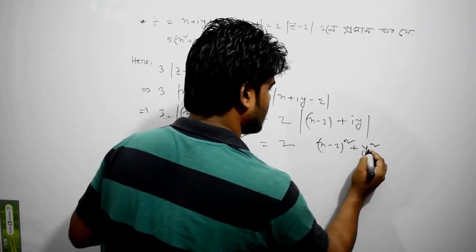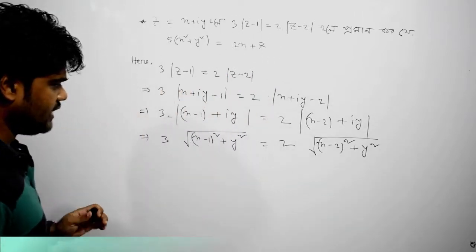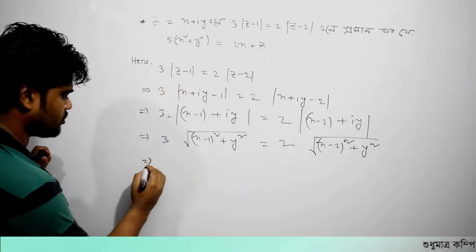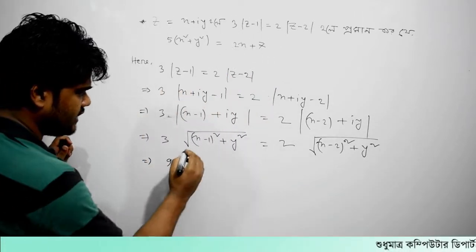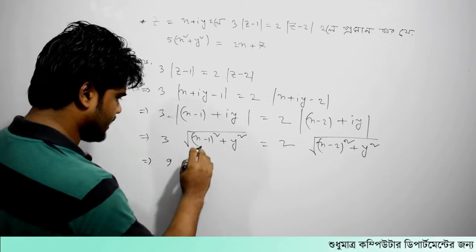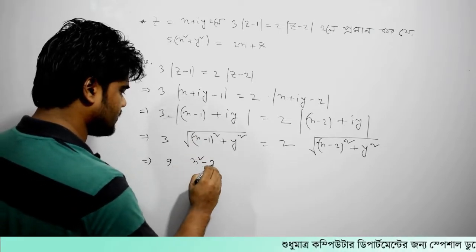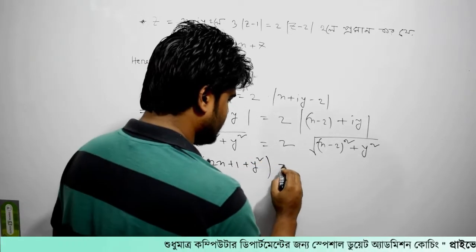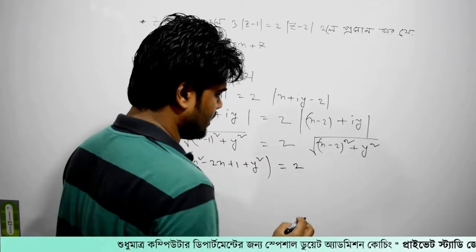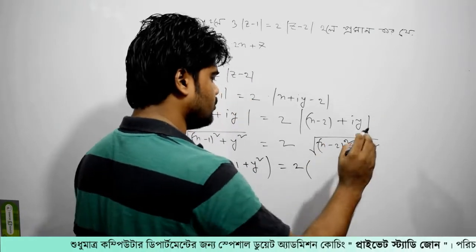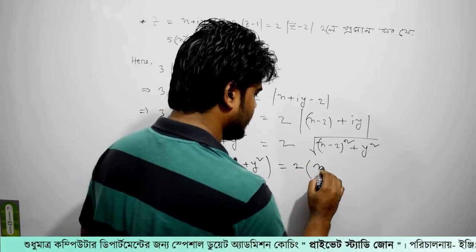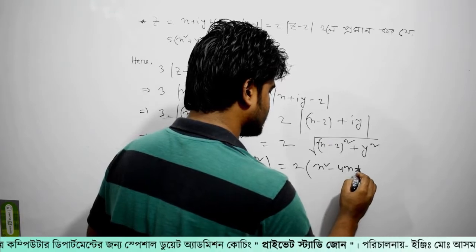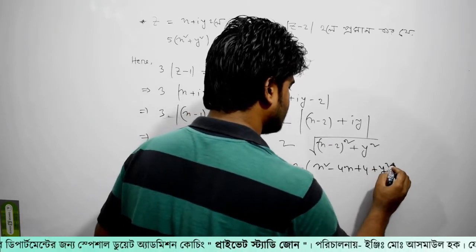The second half square, we have to give this calculation. The second half square is x square minus 4x plus 4 plus y square.